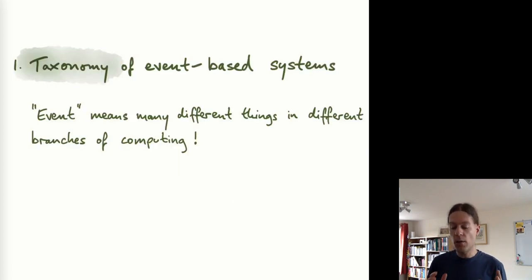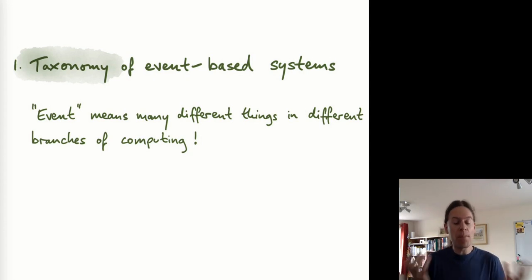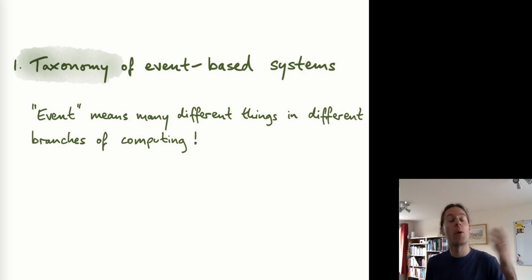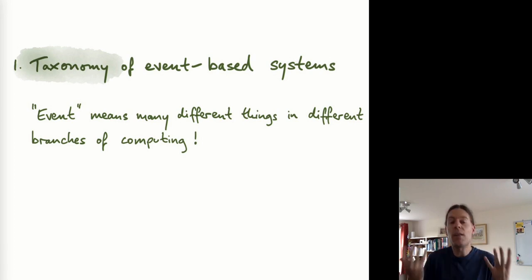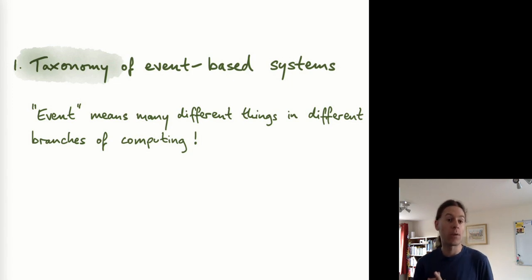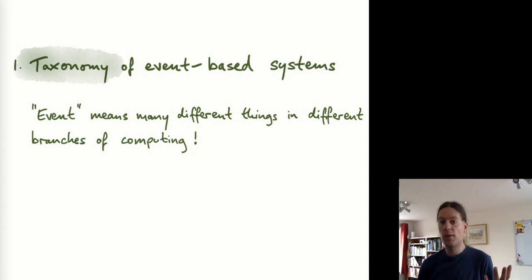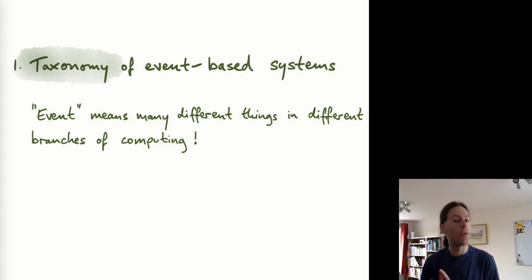What I want to talk about today is a kind of taxonomy of the big wide world of event-based systems. The word 'event' means many different things in different branches of computing. I've spent the last 10 years or so working on a variety of different event-based systems both in industry and in research, and through that I have built up a subjective categorization and taxonomy of how I think about differentiations between different types of event-based systems.